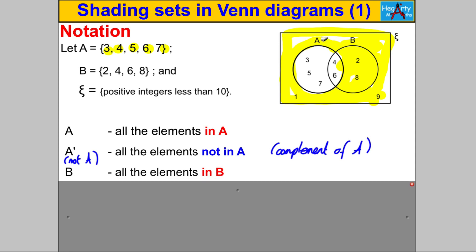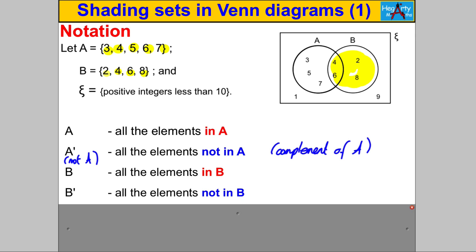Next, B — that's easy, it's all the elements in B. You would just color in that circle. The elements in B are 2, 4, 6, and 8. Similarly, B dash, or 'not B,' or the complement of B, is all the elements outside the circle of B — everything inside the universal set that is outside B. The elements there are 1, 3, 5, 7, and 9.